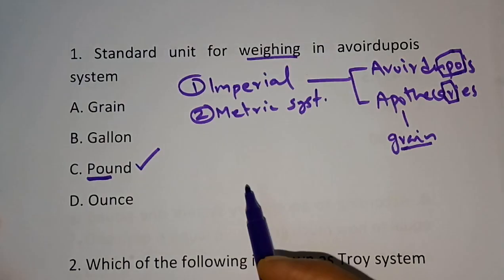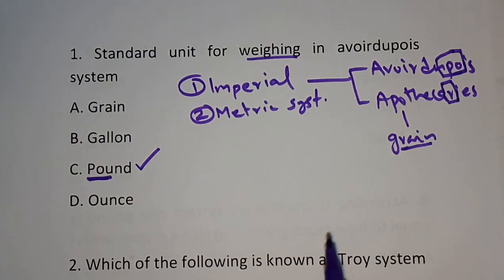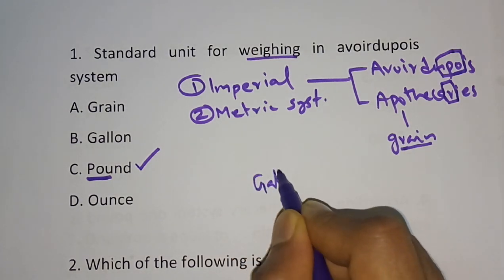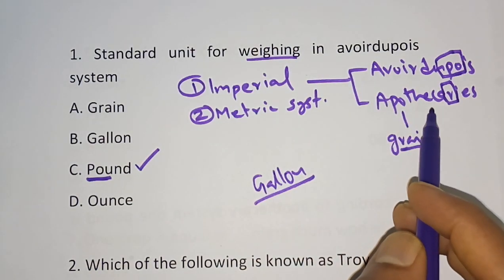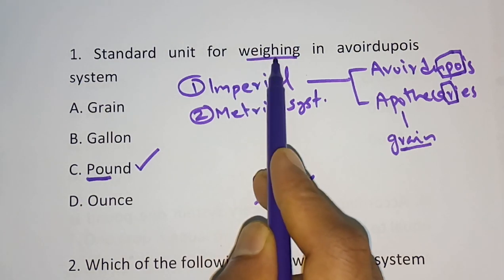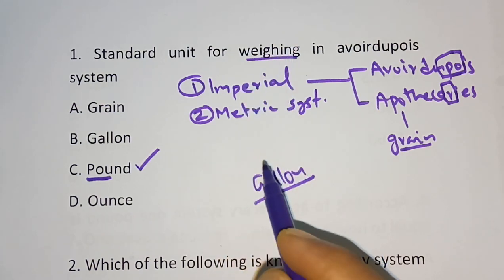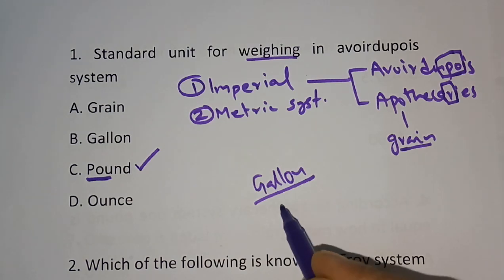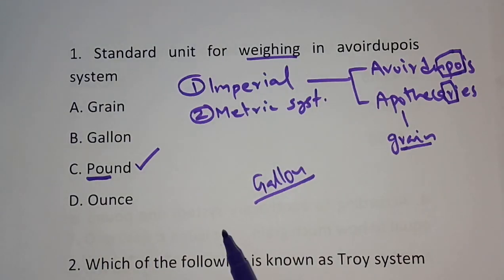This was about weighing. But in both systems — avoirdupois as well as apothecary — the standard unit for measurement of capacity (volume) is gallon. The question was about weighing, but it's also important to know that in both systems gallon is the standard unit for capacity.